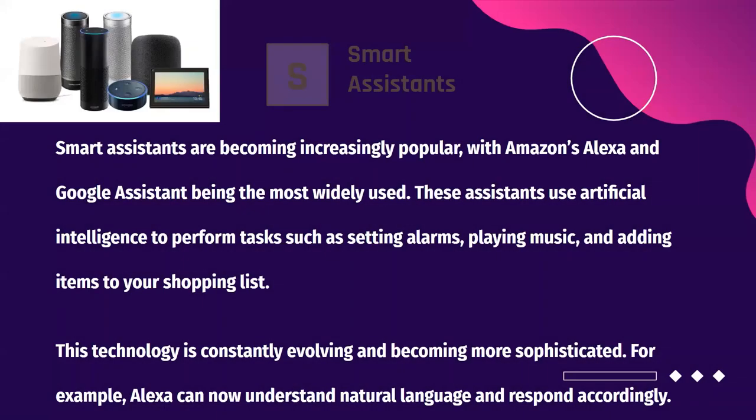Smart assistants such as Amazon's Alexa and Google Assistant are also becoming increasingly popular. These assistants use artificial intelligence to perform tasks such as setting alarms, playing music, and adding items to your shopping list. This technology is constantly evolving and becoming more sophisticated. For example, Alexa can now understand more natural language and respond accordingly.